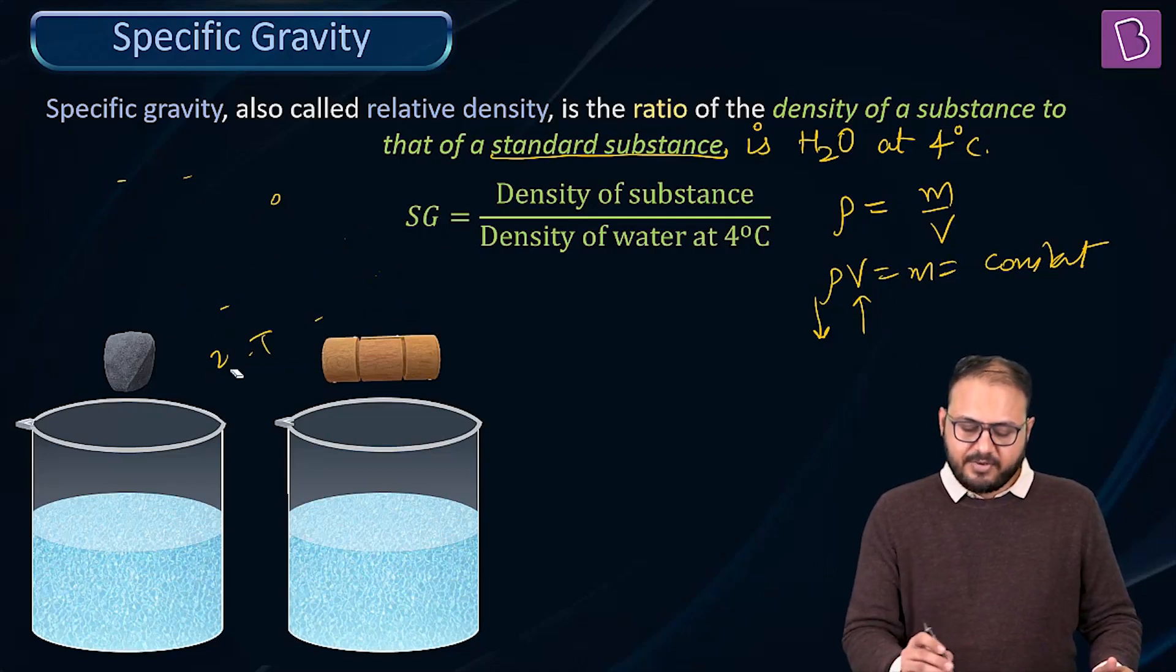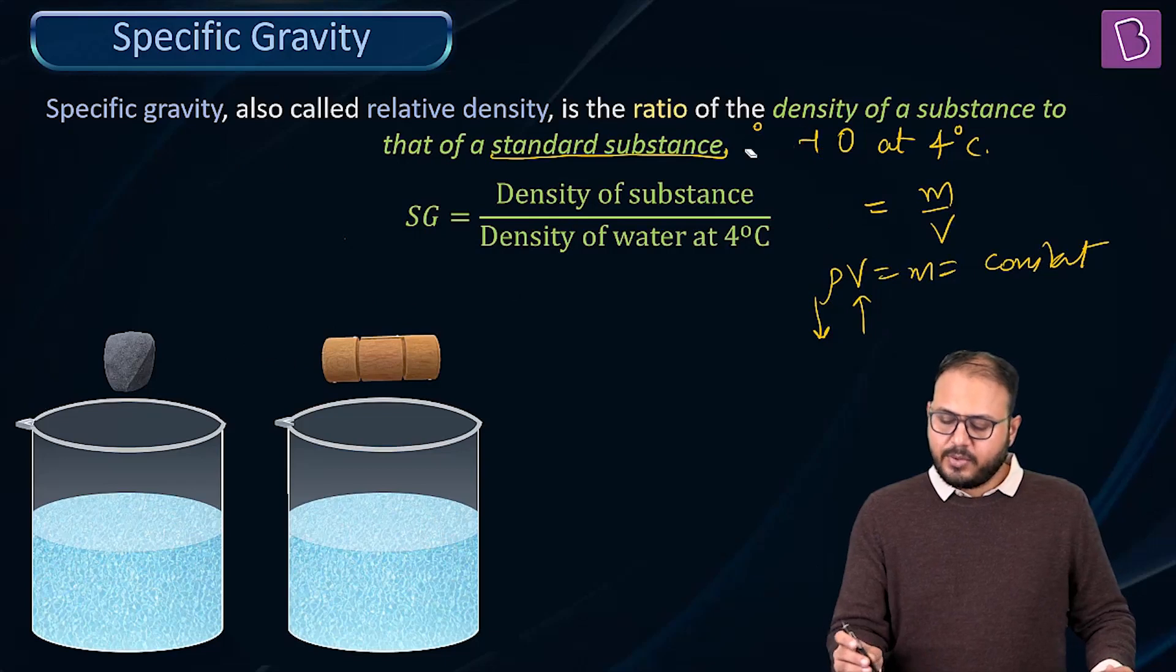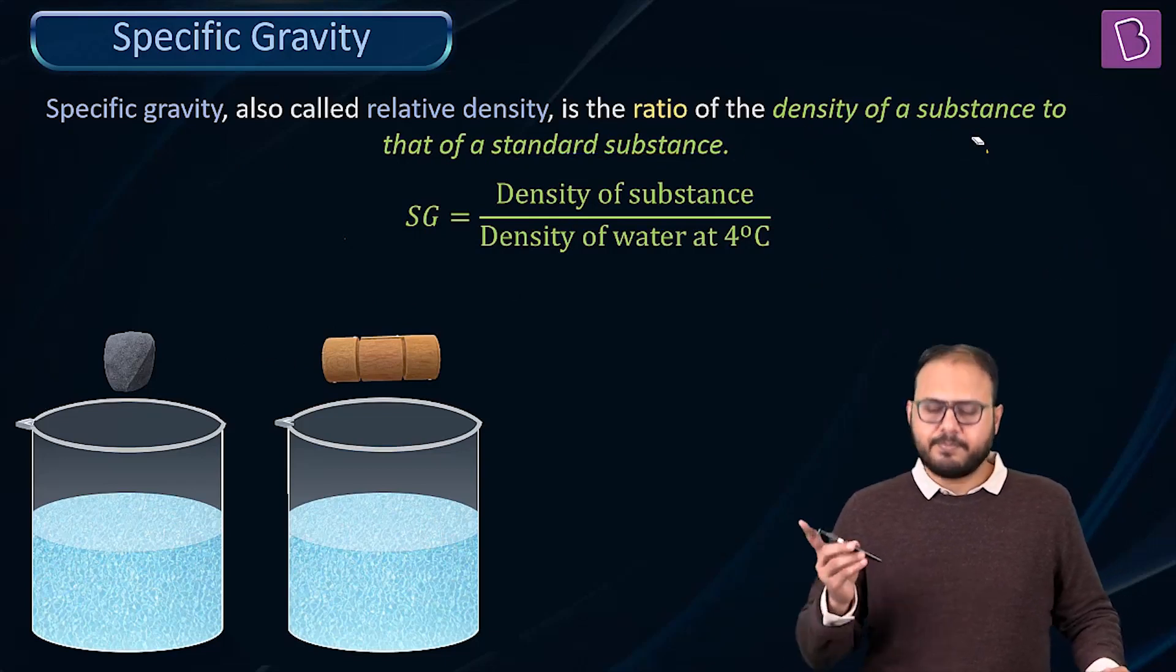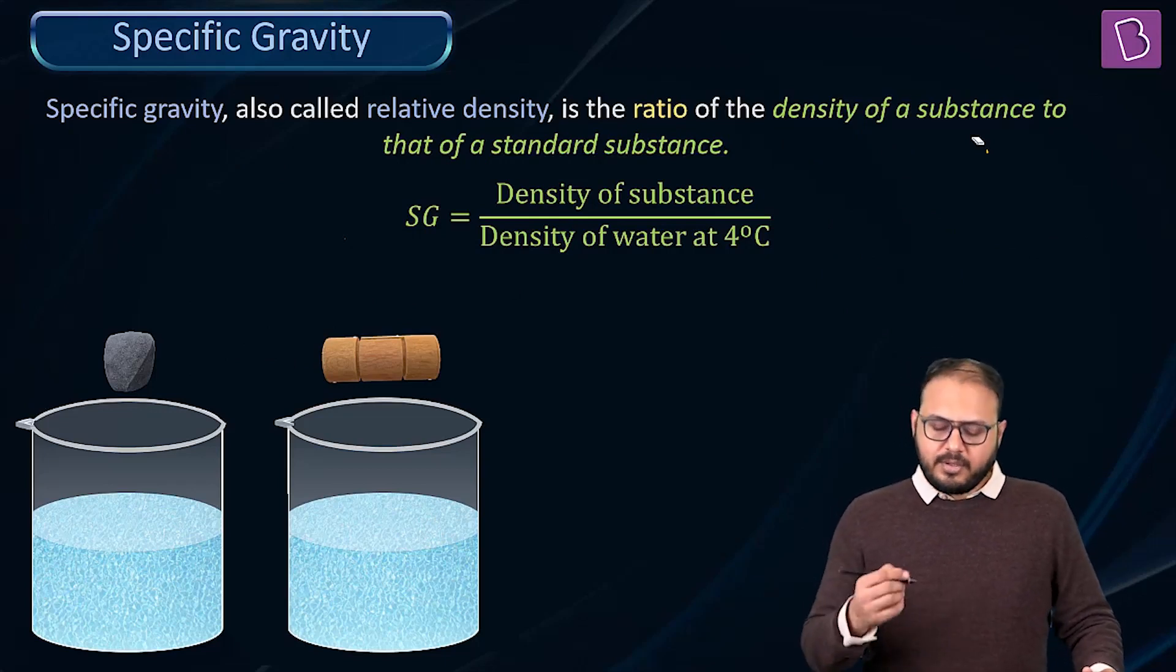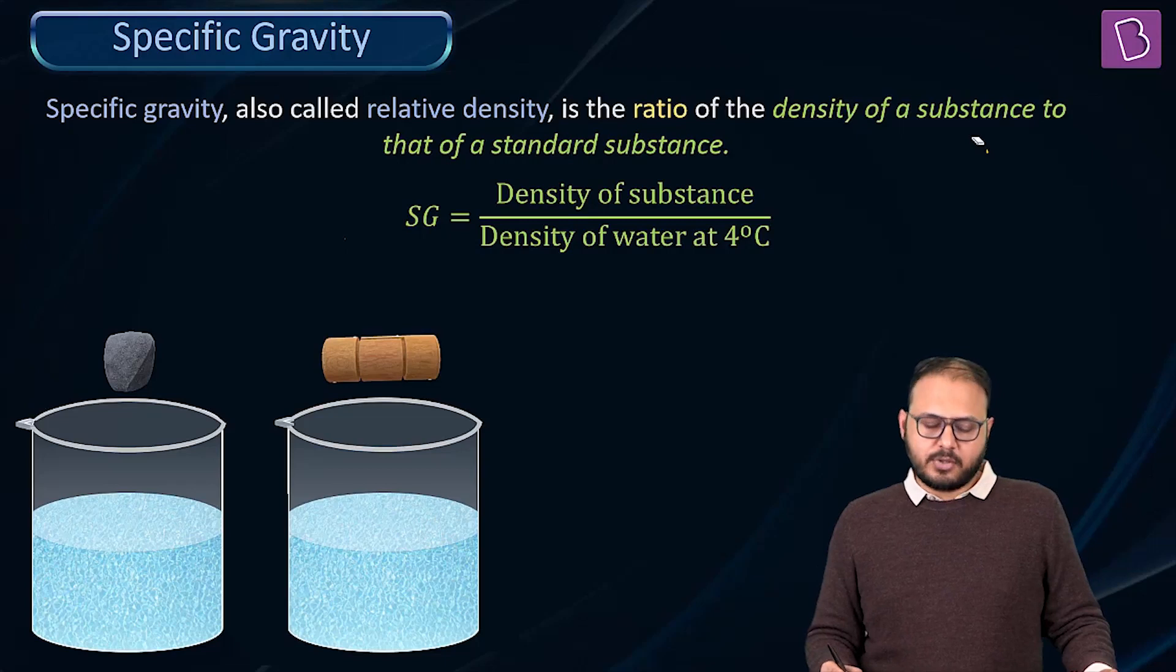Water's density is highest at 4 degrees Celsius. So what is specific gravity? If you choose water as that standard, you take the value as 1 gram per cc or 1000 kilogram per meter cube, let's say. The ratio of density of a substance upon density of water at 4 degrees Celsius is called its relative density or specific gravity.